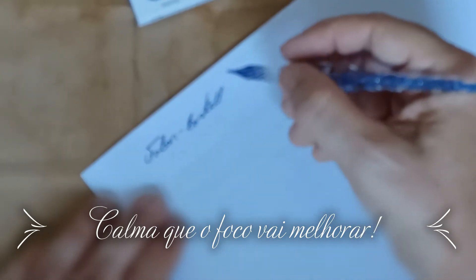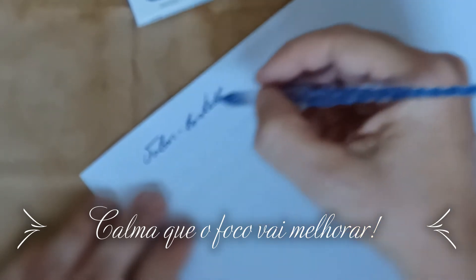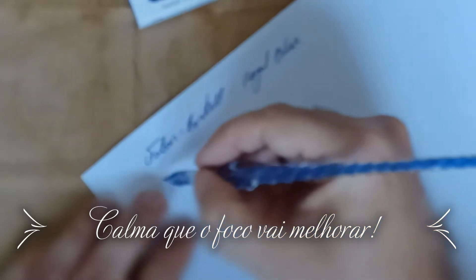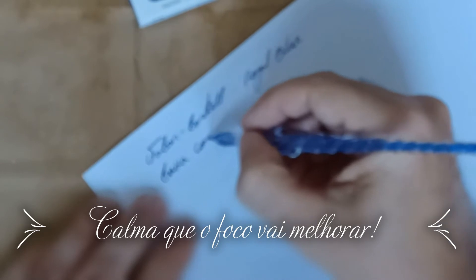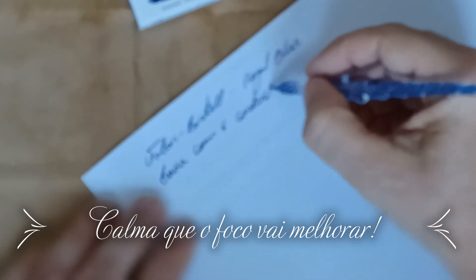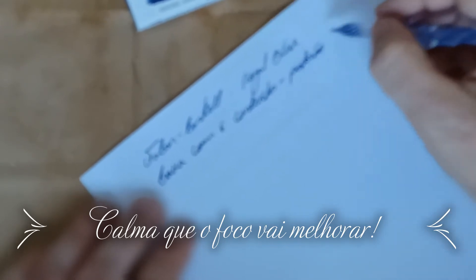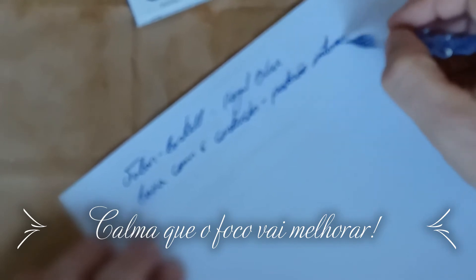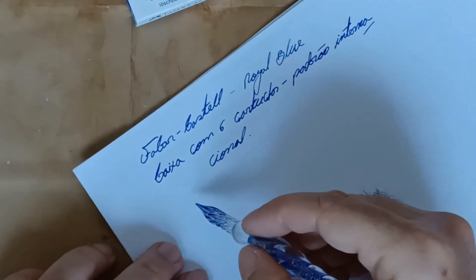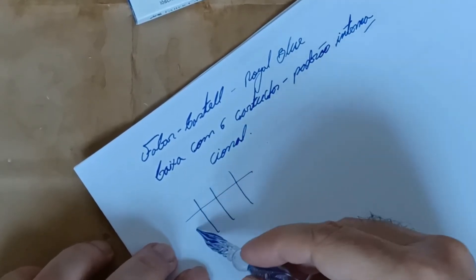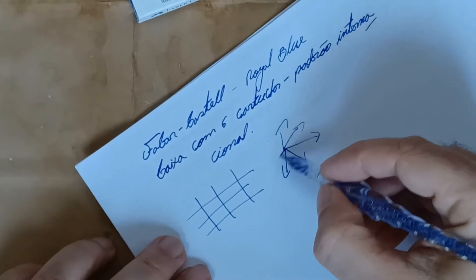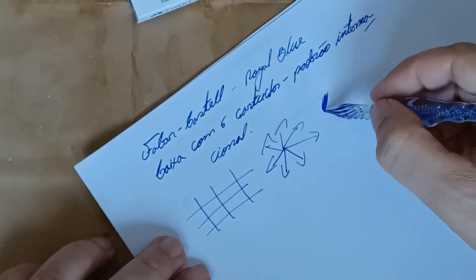Vamos lá então, vamos ver aqui a tinta. Vamos tentar colocar aqui centralizado no vídeo para ficar bom para vocês assistirem. É uma Faber-Castell Royal Blue, caixinha com seis cartuchos padrão internacional. A caneta de vidro a gente tem que ir girando ela à medida que a gente vai escrevendo para aproveitar o máximo possível da tinta.